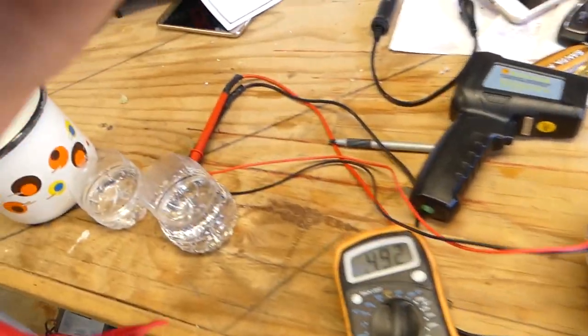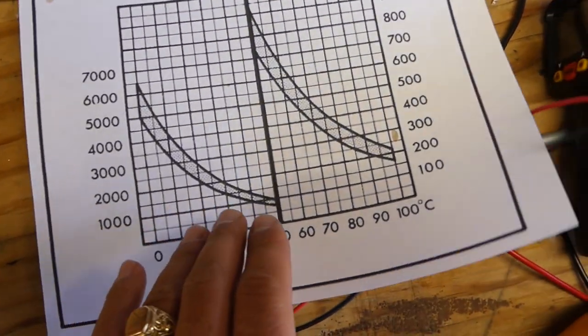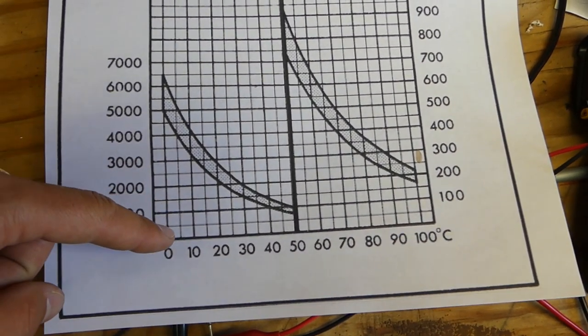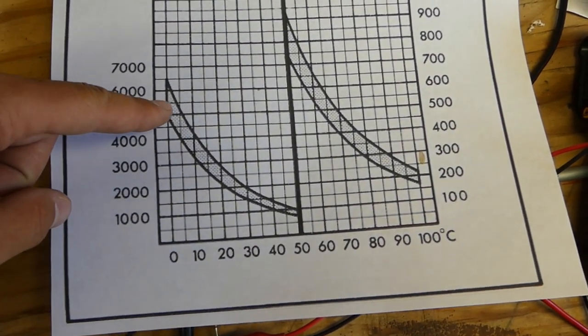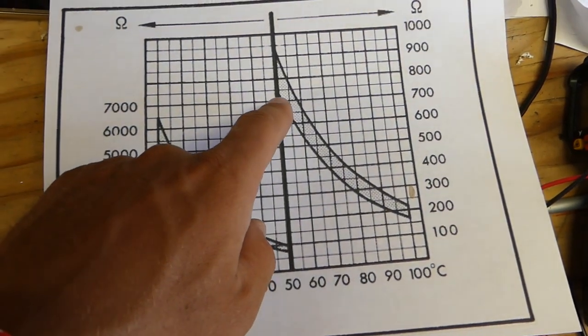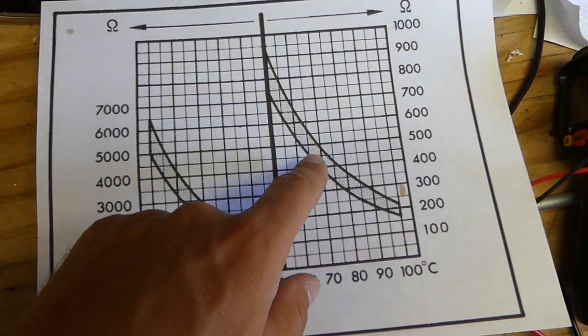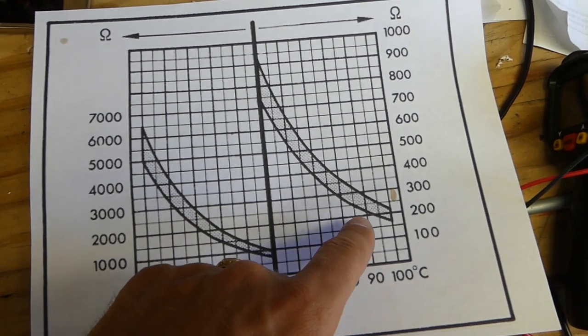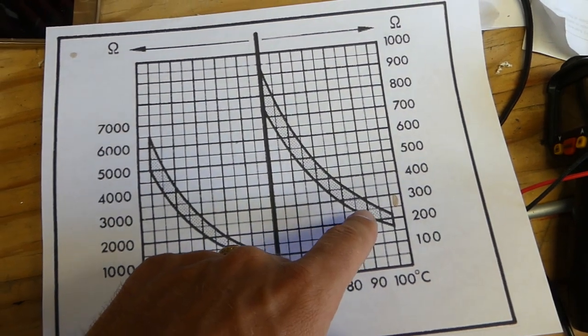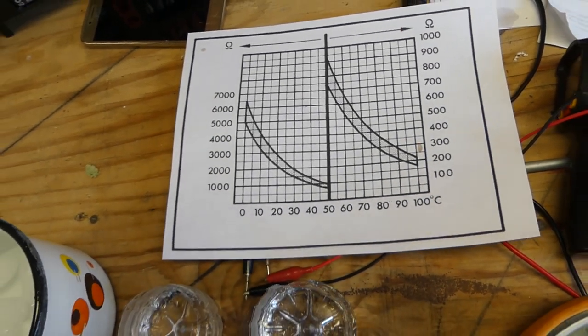This is the graph in Celsius. You can convert to Fahrenheit if you need to. You can see at 0 degrees should be 5 to 6.5k, at 50 degrees should be about 750 to 950, at 70 degrees should be 400 to 500, and at 90 degrees when the thermostat usually opens, you'll be about 225 to 300. That's how you know if your temperature sensor is good. Thank you for watching, see you guys next time.